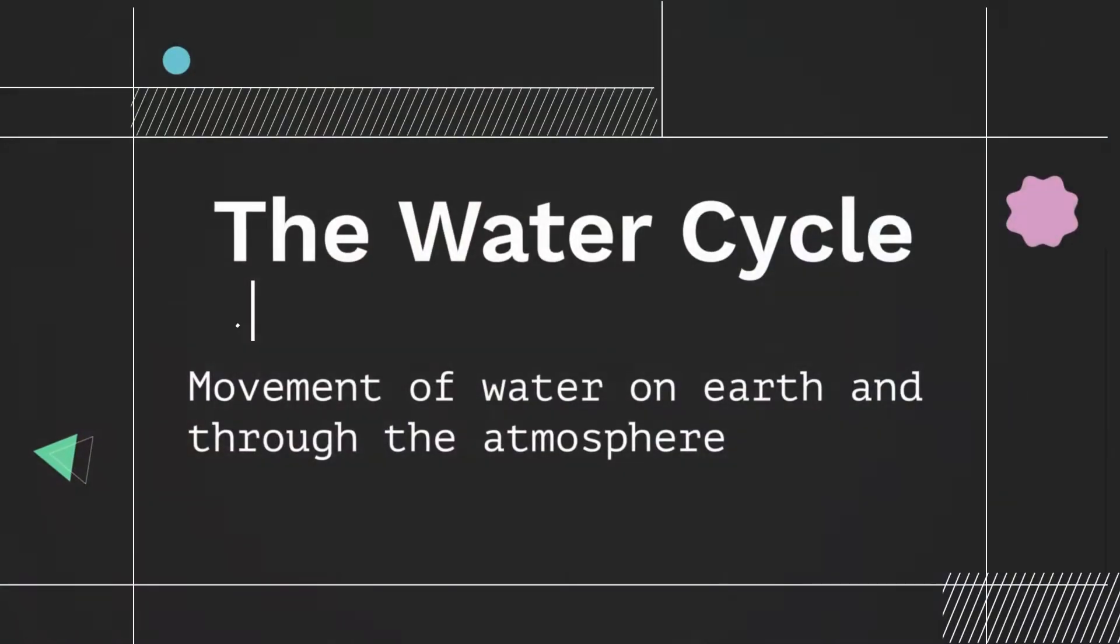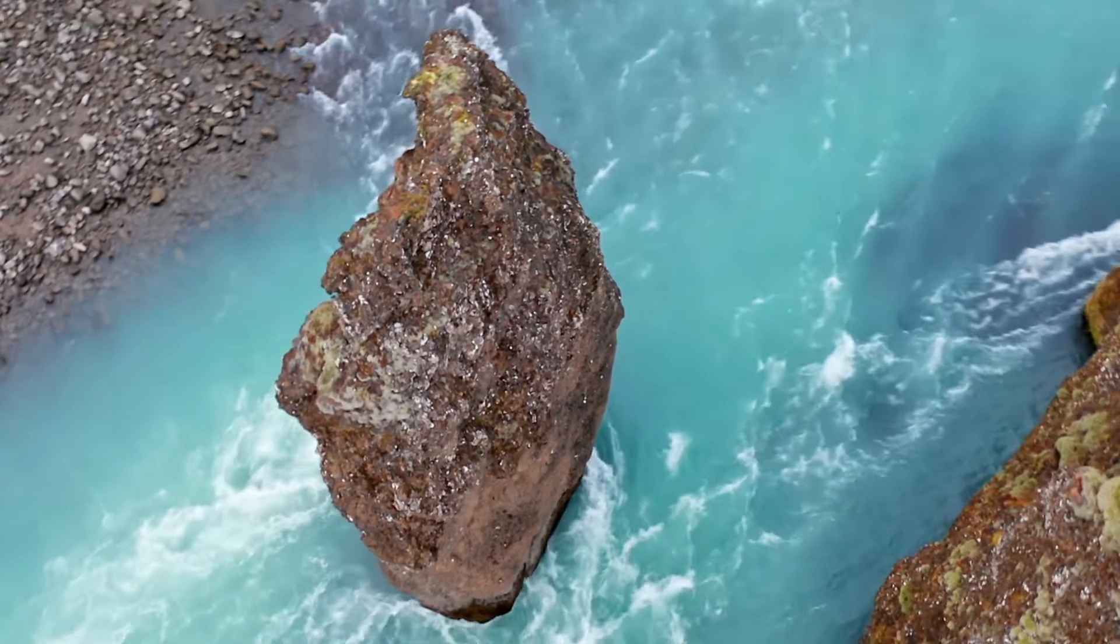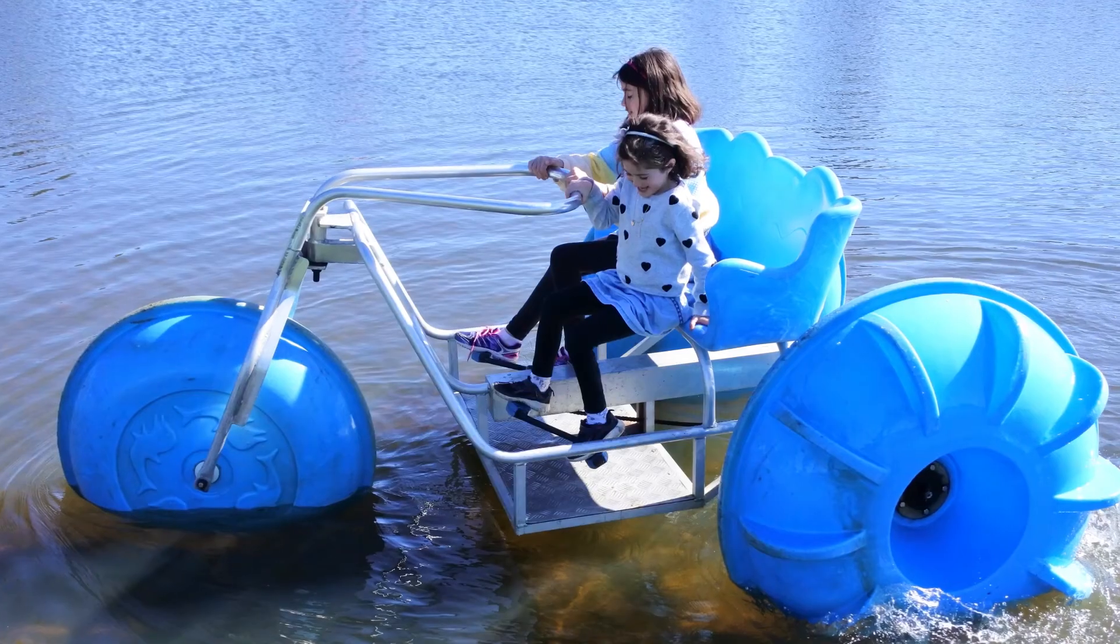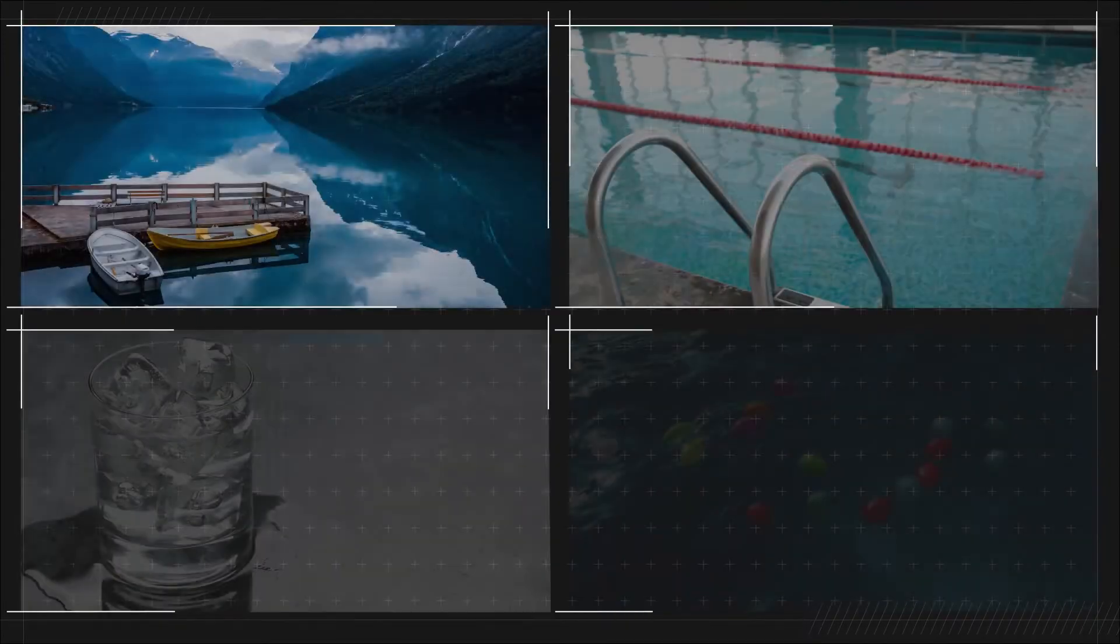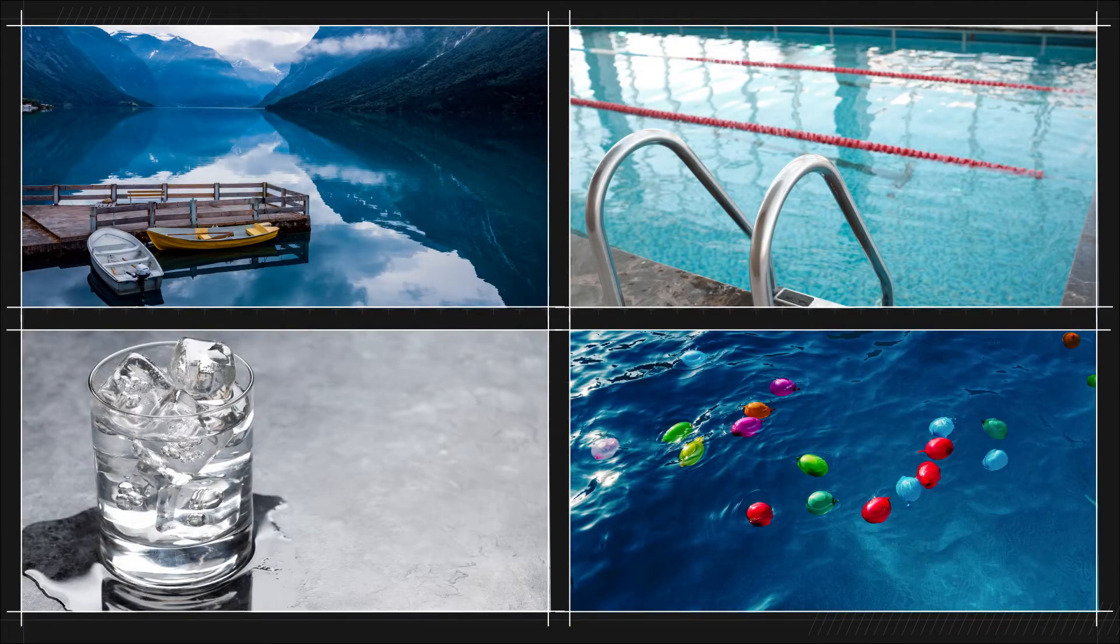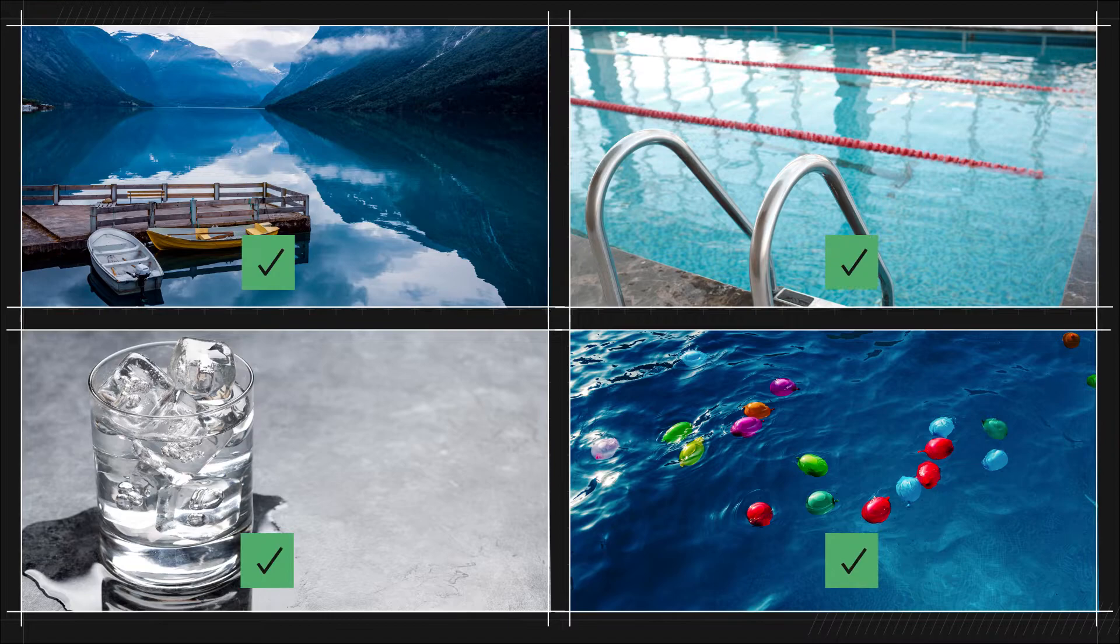The water cycle is the movement of water on Earth and through the atmosphere. All water on Earth is part of the water cycle. Which of these is part of the water cycle? All water anywhere on Earth is a part of the water cycle.